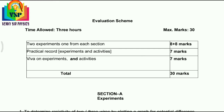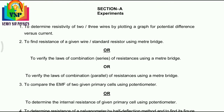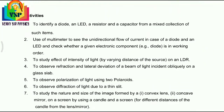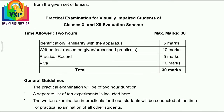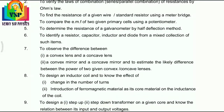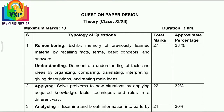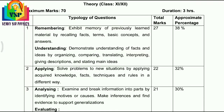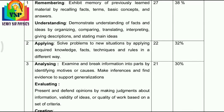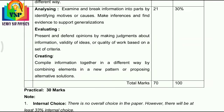For the internal practical exam evaluation scheme: these are the experiments from Section A, and these are the activities from Section B. There are also general guidelines and a list of practicals. For the question paper design for Plus 1 and Plus 2: Remembering and Understanding — 27 marks, 38%; Applying — 22 marks, 32%; Analyzing — 21 marks, 30% of total marks; Evaluation and Creating also included.